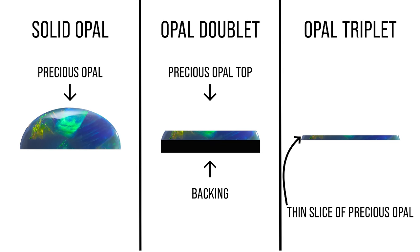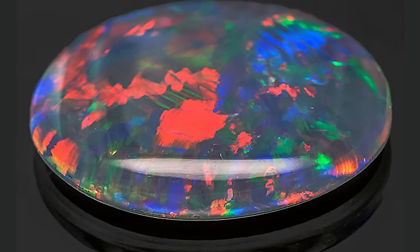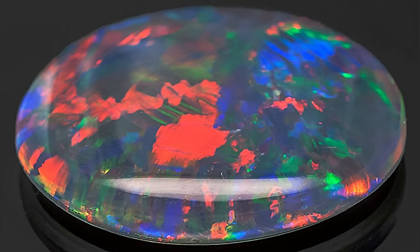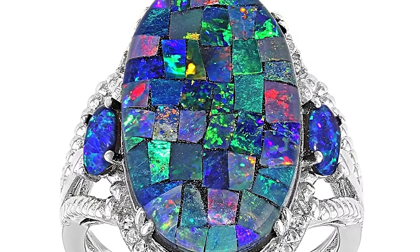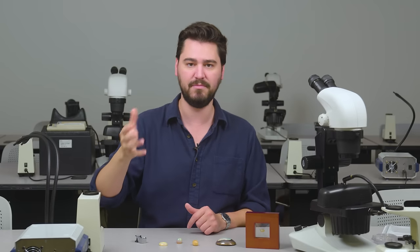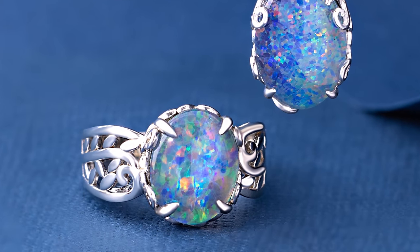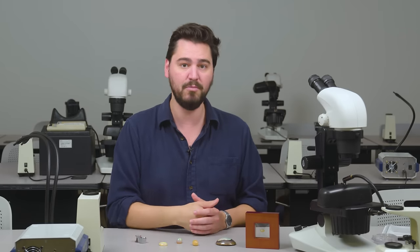A triplet is made with an even thinner slice of opal and that same backing, but with a little dome on top of clear quartz, glass, or plastic — it's basically an opal sandwich. Since it uses an even thinner slice than a doublet, a triplet is even more affordable. In a mosaic triplet, the middle layer is made of various small pieces of precious opal put together like a little puzzle. You can identify both doublets and triplets by observing them from the side — you should be able to see the layers of opal, backing, and dome with your naked eye. With a triplet, if you look closely from different directions, the play of color will appear not at the surface but deeper below the transparent dome, which is not what solid opal looks like.